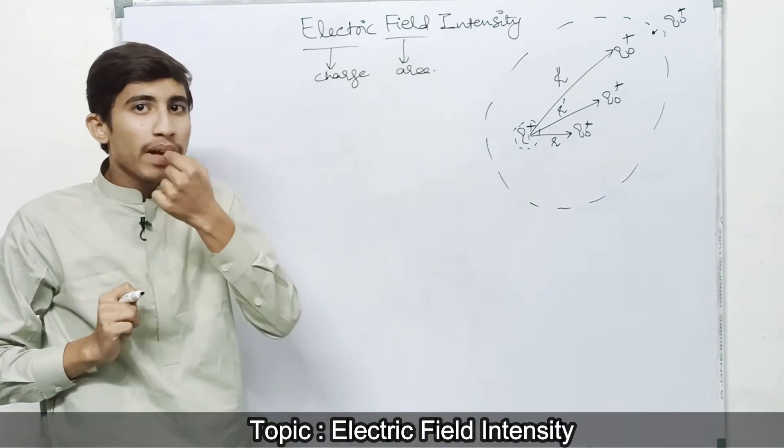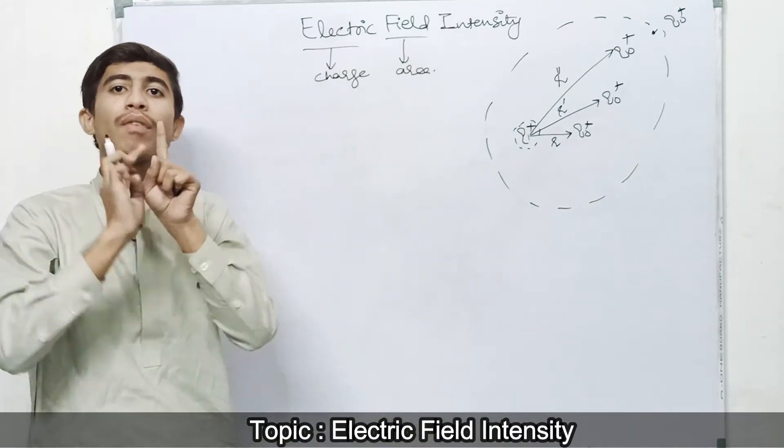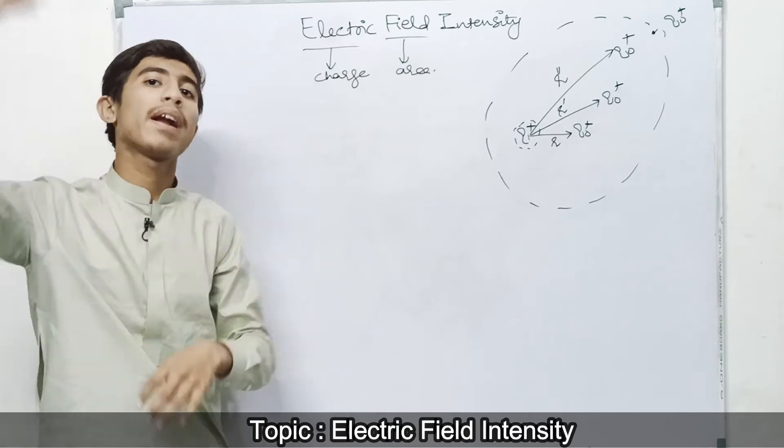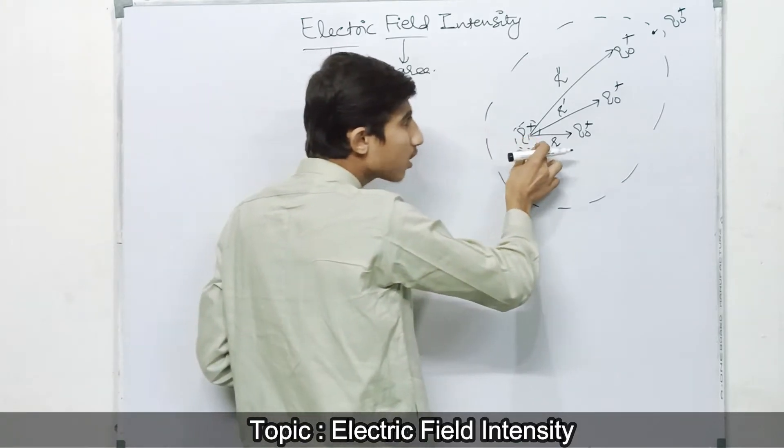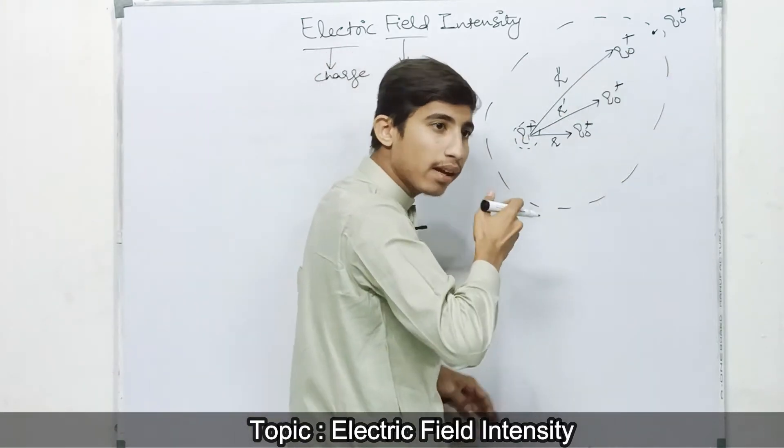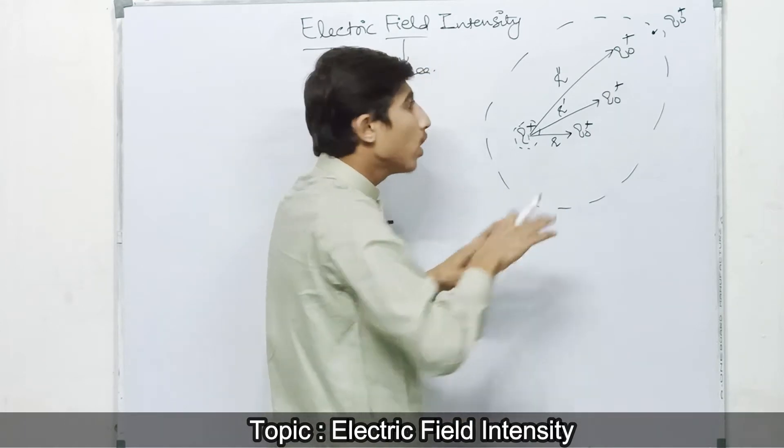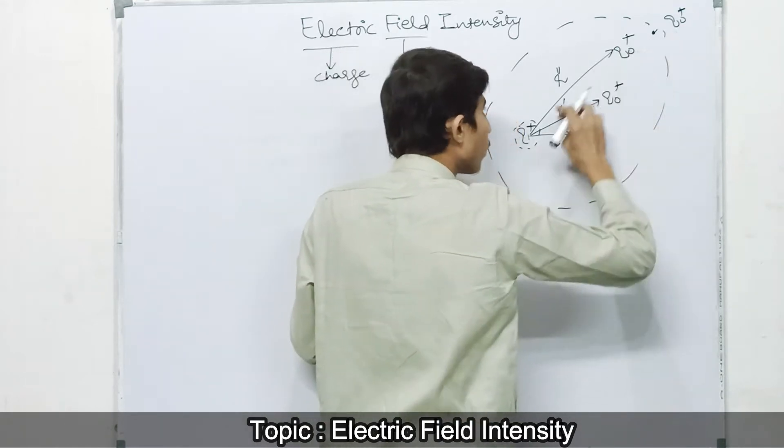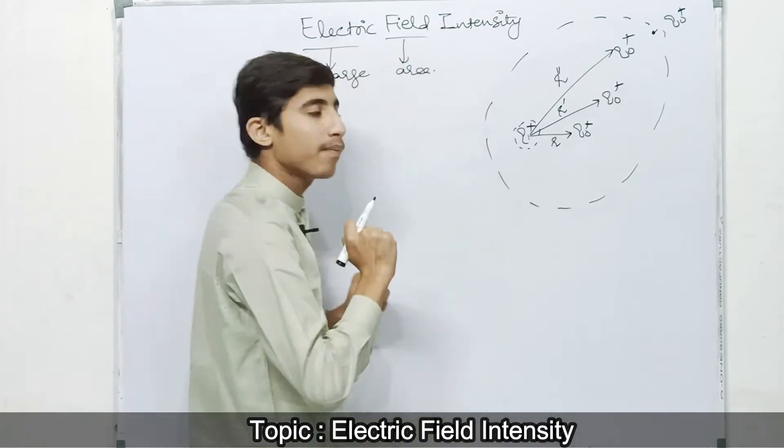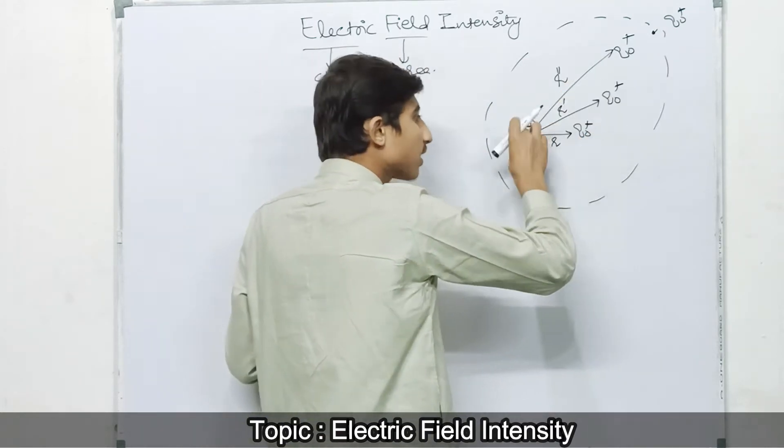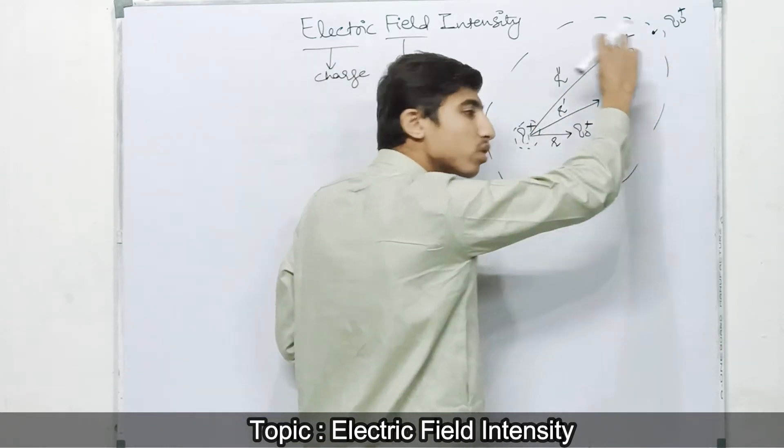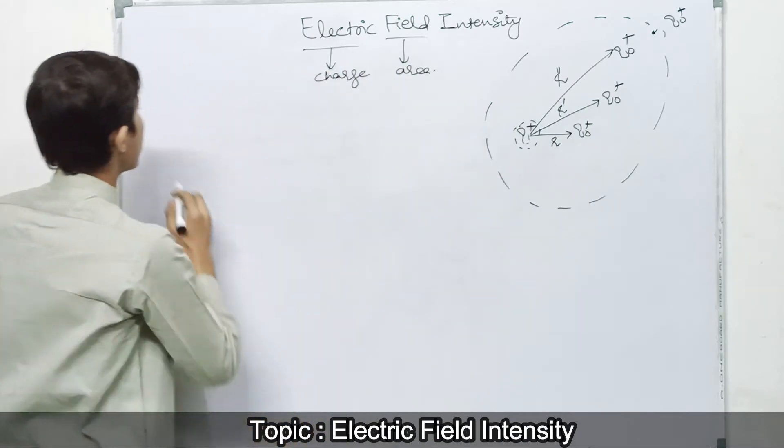Just like if I clap, my sound will vibrate up to a particular area, and then beyond that it will not go. Similarly, one charge will exert force on another charge within a certain boundary. Beyond that, if I don't place a charge there, that charge will not experience any force. So the area around which a charge exerts force on another charge is called the electric field.